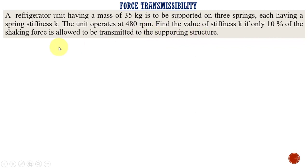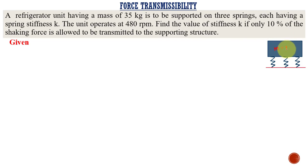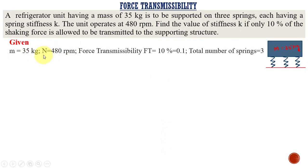Let us see what are all the given data. The refrigerator unit has a mass of 35 kg and it is supported on three springs. It is not given whether the springs are connected in series or parallel, but for this case we have considered these three springs are connected in parallel. The mass is 35 kg, the speed of the system is 480 rpm, and force transmissibility is 10% — that is, only 10% of the entire force generated in the refrigerated unit is allowed to be transmitted to the supporting structure.